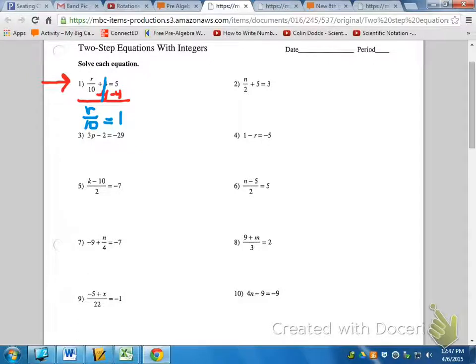What operation do you see when you have R over 10? It's division. So the opposite of division means that we are going to multiply both sides by 10.